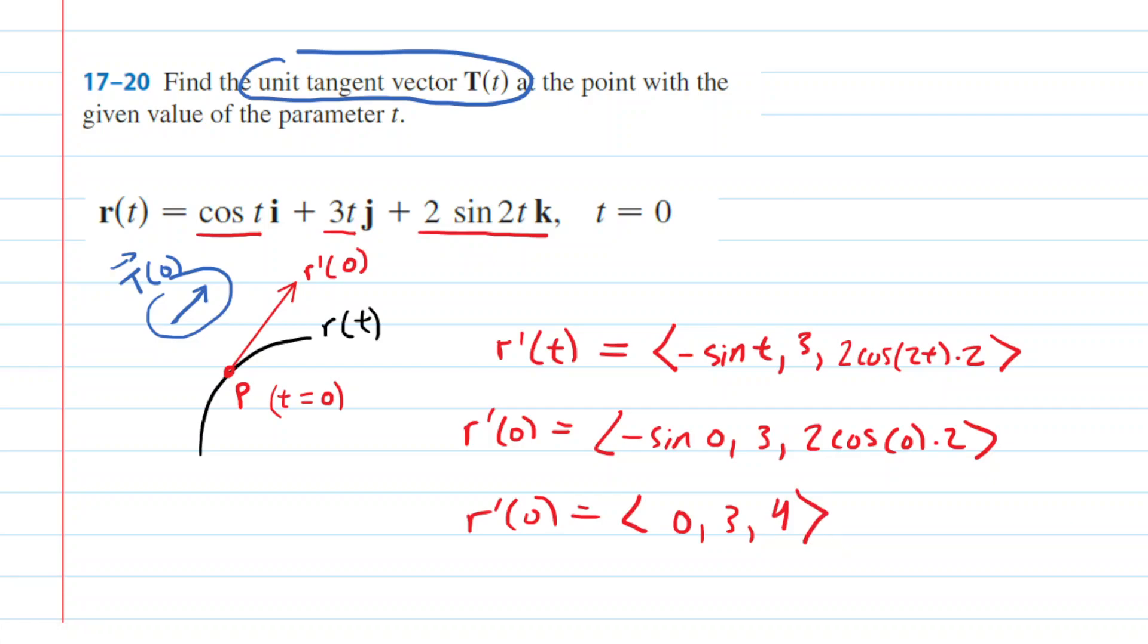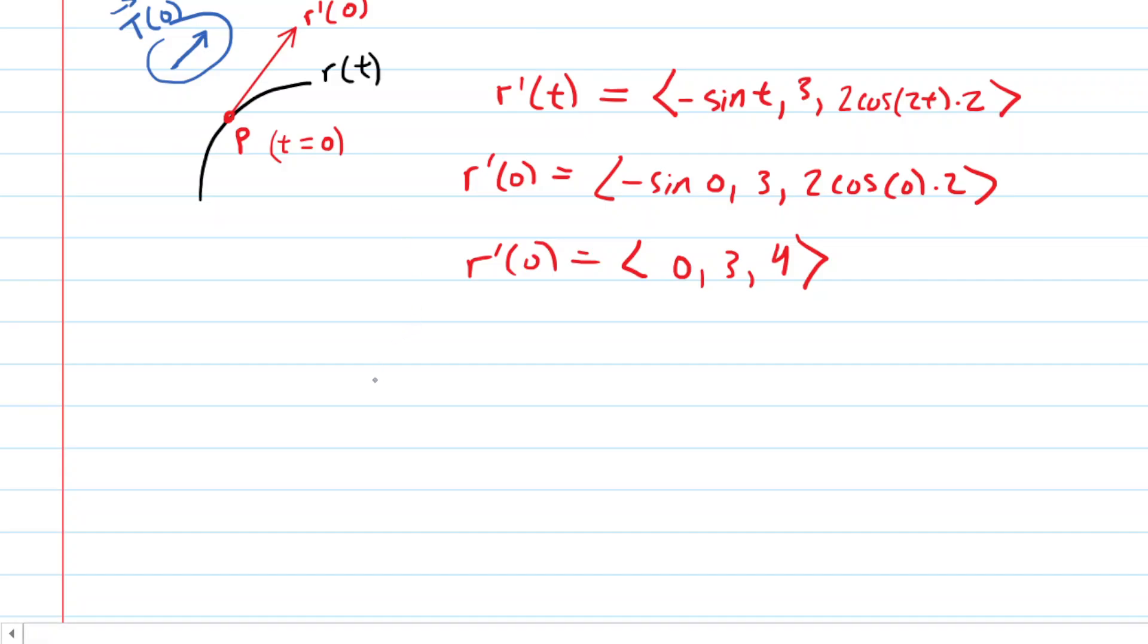What we now need to do is find the unit tangent vector. Now, recall, to find the unit vector of any vector would require you to take your vector. So, we're going to take r prime of 0. And then we're going to divide it by the magnitude of r prime of 0. You probably learned in an earlier section that to find a unit vector, you simply take your vector and divide it by the magnitude.